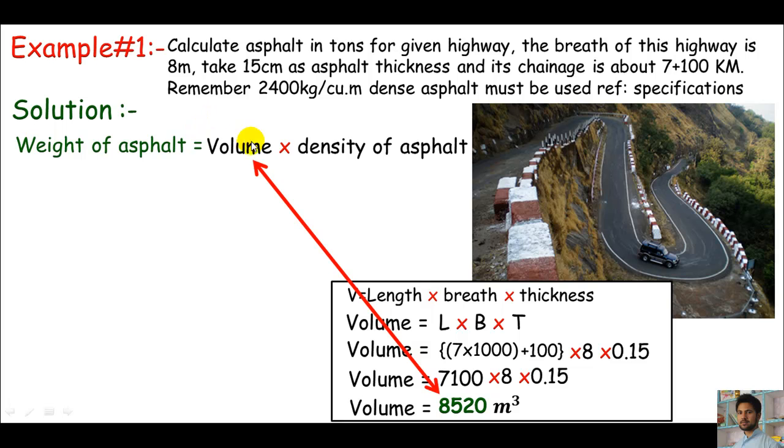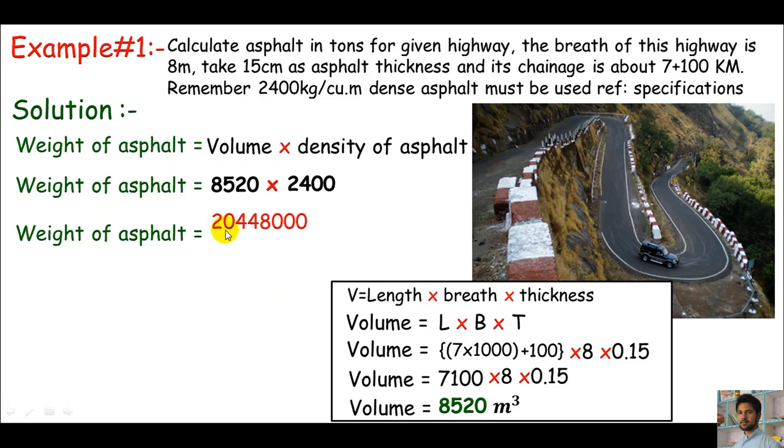I'll put this in the equation. You must get the weight of asphalt. The volume is 8520 times the density. The density is 2400 kg per cubic meter. A few friends ask what's the density? It's of course mass per volume.